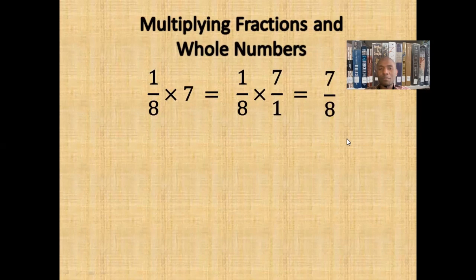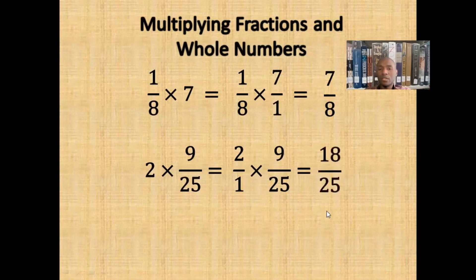Let's try another problem. Suppose we have 2 times 9/25. Once again, we would turn the whole number into a fraction by putting it over 1. Thus, we get 2 wholes times 9/25. And if we multiply the numerators together and the denominators together, we get 18/25.